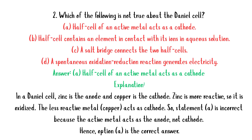MCQ 2: Which of the following is not true about the Daniell cell? A. Half cell of an active metal acts as a cathode. B. Half cell contains an element in contact with its ions in aqueous solution. C. A salt bridge connects the two half cells. D. A spontaneous oxidation-reduction reaction generates electricity. Answer: A. Explanation: In a Daniell cell, zinc is the anode and copper is the cathode. Zinc is more reactive, so it is oxidized. The less reactive metal, copper, acts as cathode. So statement A is incorrect because the active metal acts as the anode, not cathode. Option A is the correct answer.